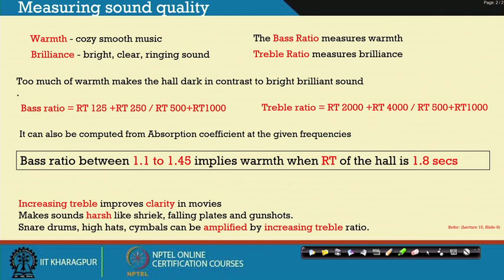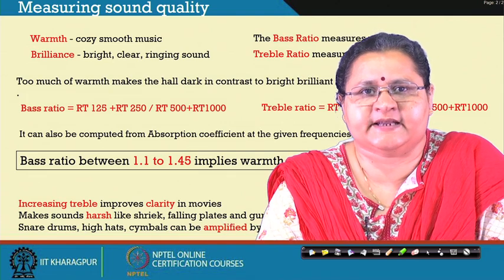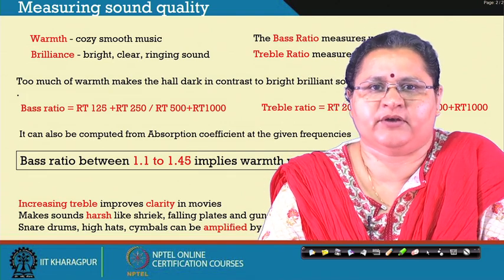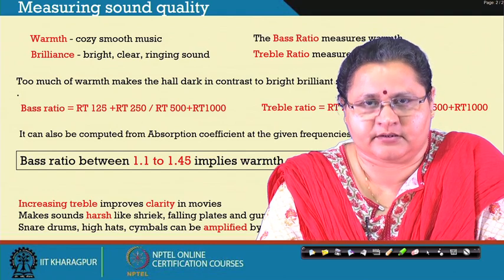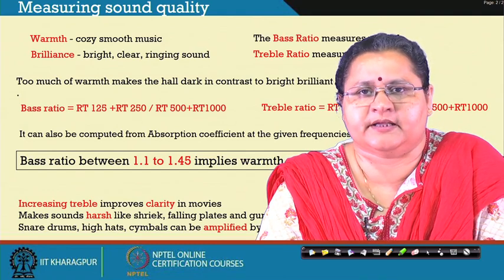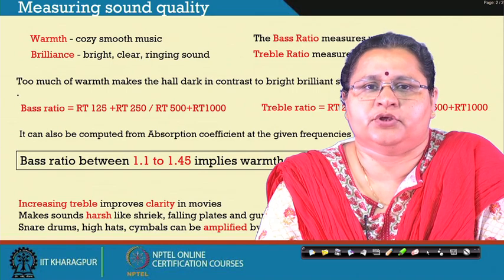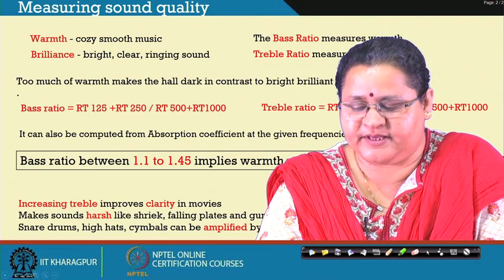Whatever the purpose, to bring warmth into a system you have to increase the bass ratio — but not to any extent, between 1.1 to 1.45 times the RT at 500 plus RT at 1000. So you can achieve warmth within your space. You can refer to lecture 15, slide 8, to get information on the reverberation time and the values.